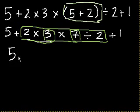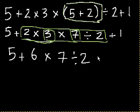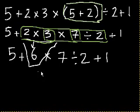So if we go left from right, we get 5 plus, what's 2 times 3? It's 6 times 7 divided by 2 plus 1. The 2 times 3 just equals 6. That's all we did.